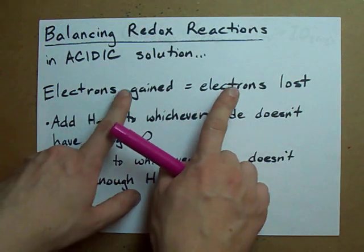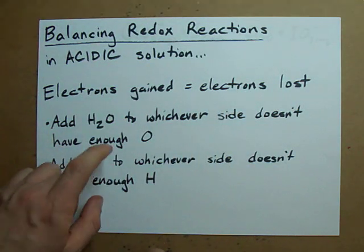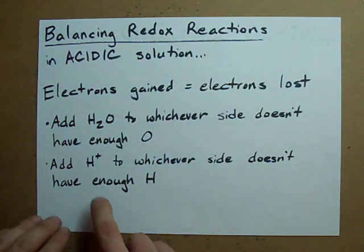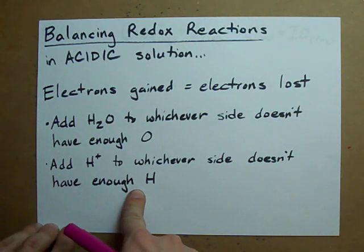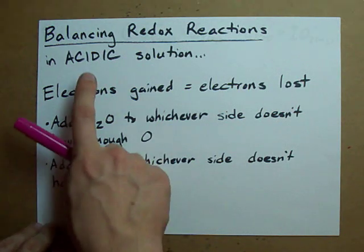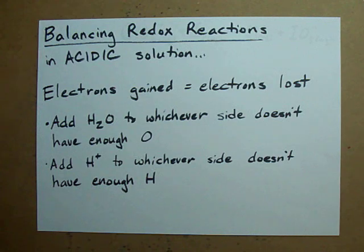Once you've had a balance of electrons gained and lost, all you're going to do is add H2O to whichever side doesn't have enough oxygen, and then you're going to add H+ to the side that doesn't have enough H. We're adding H+ because it's acidic solution, and H+ is what makes solutions acidic. Let me show you how it's done.